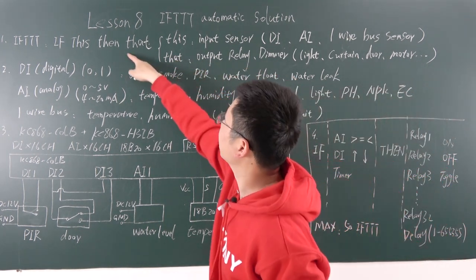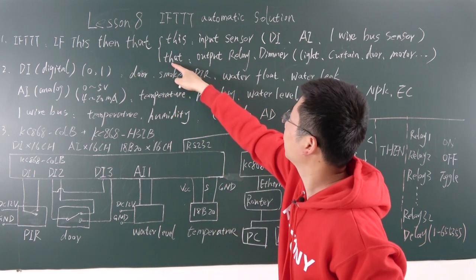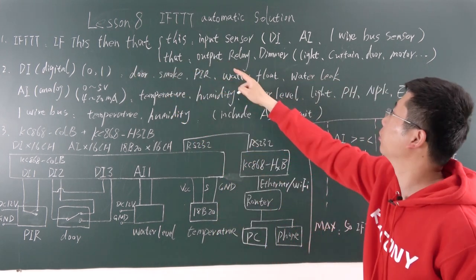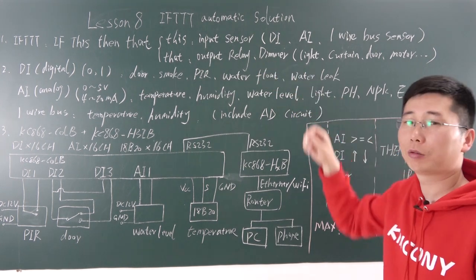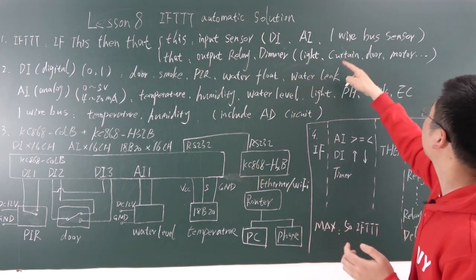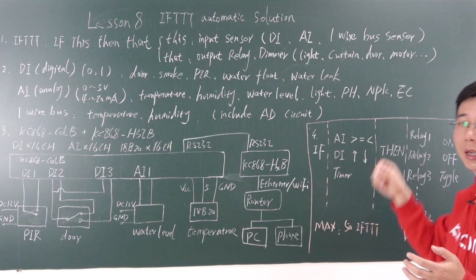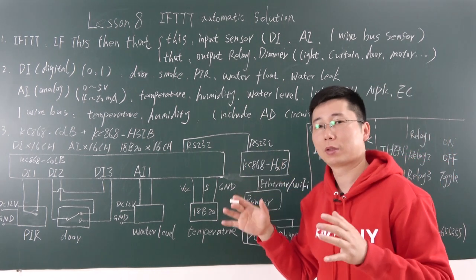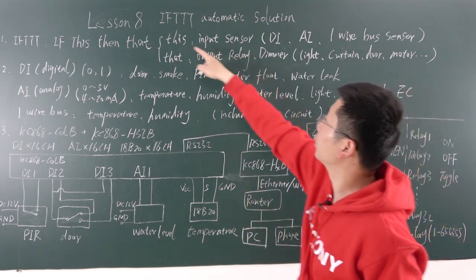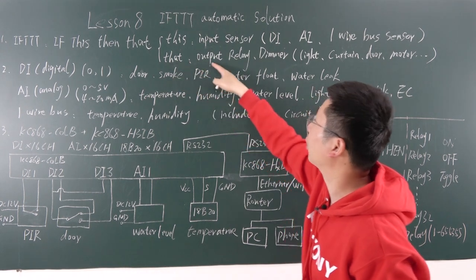This word 'this' means the input sensor. This 'that' means the output. So we have used the relay or the dimmer to control the lamp, or control the curtain, door, or motor. This is for input and this is for output.